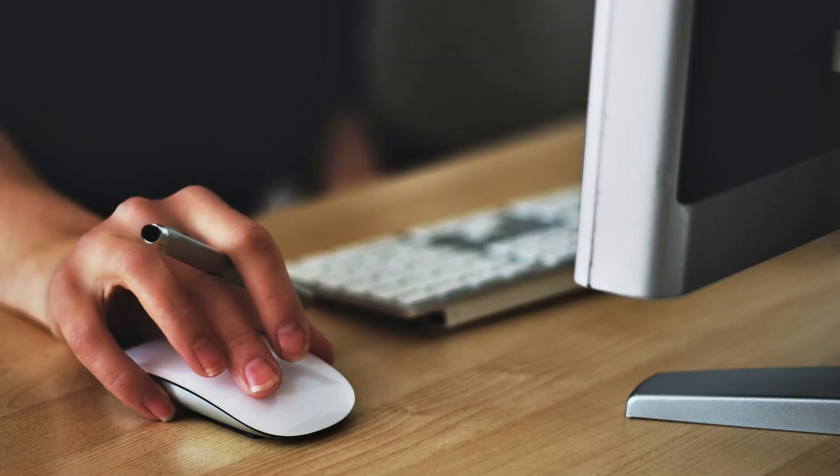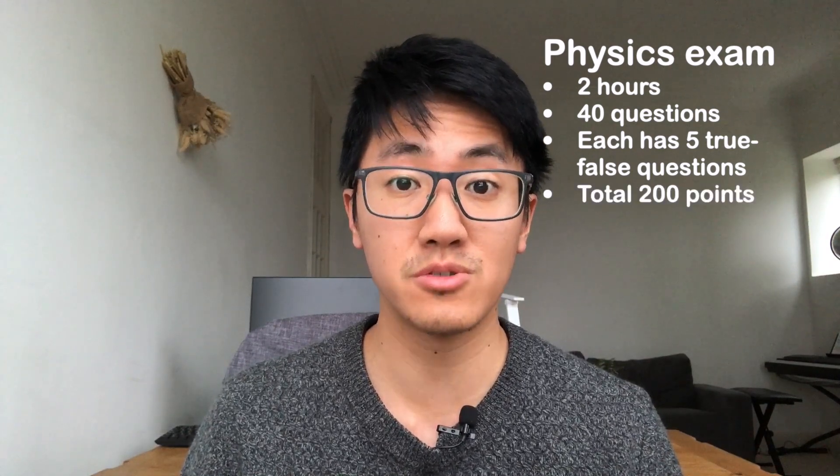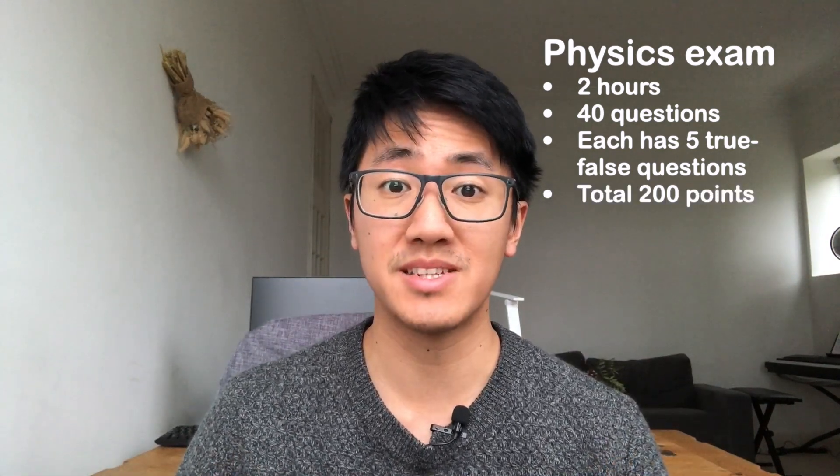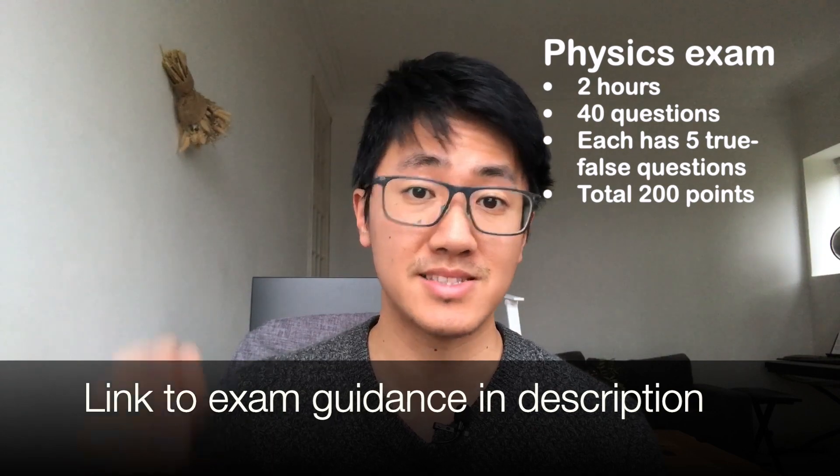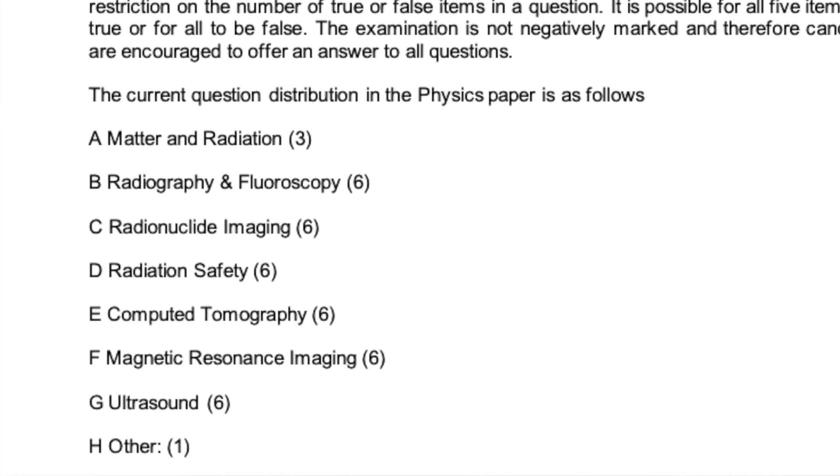The FRCR Part 1 is an online exam comprising two parts: physics and anatomy. These are usually held in a test centre on a computer and are typically on two separate days. The physics exam lasts two hours and consists of 40 questions. Each physics question names the topic of the question and gives you five true-false questions, so your total maximum score would be 200 points. There's more of a breakdown in the exam guidance — I'll put a link in the description. It tells you which topics come up and how many questions are allocated to each topic.